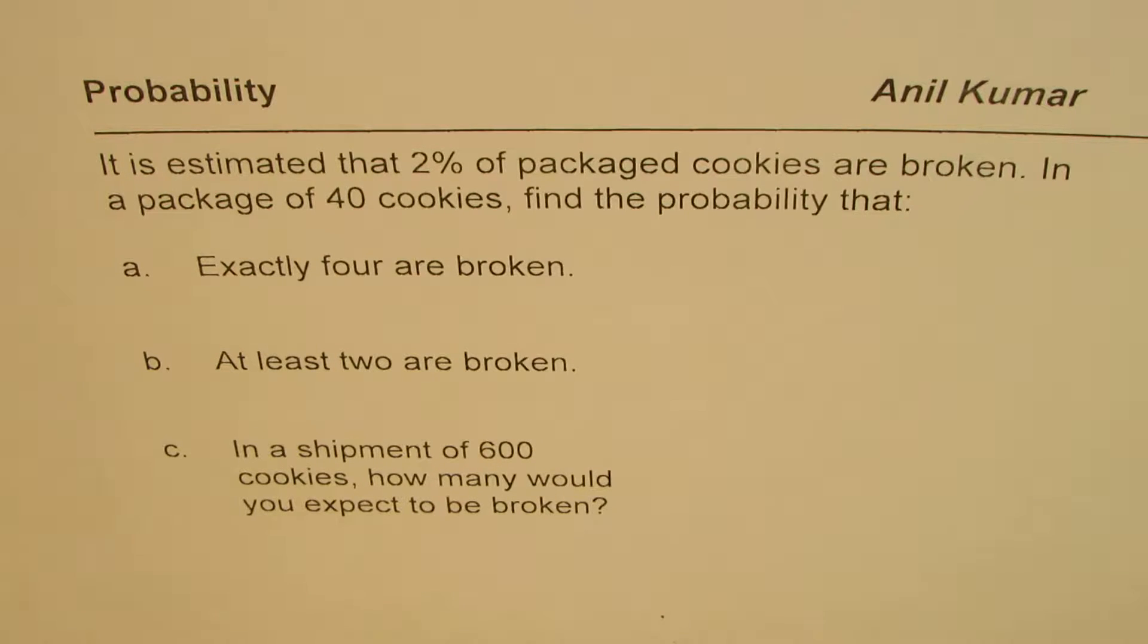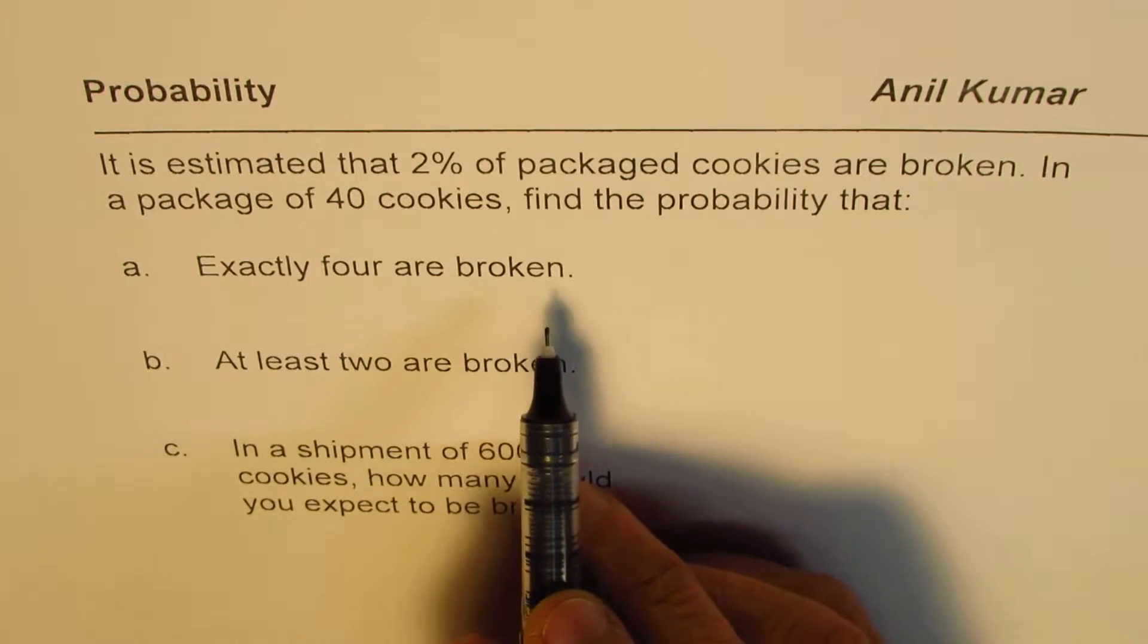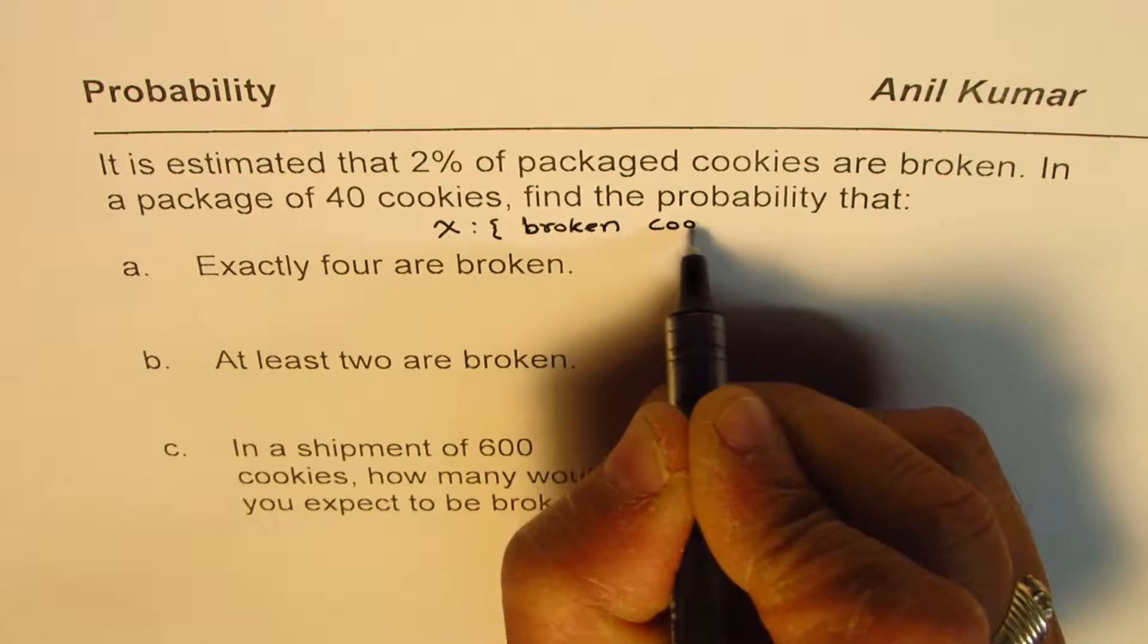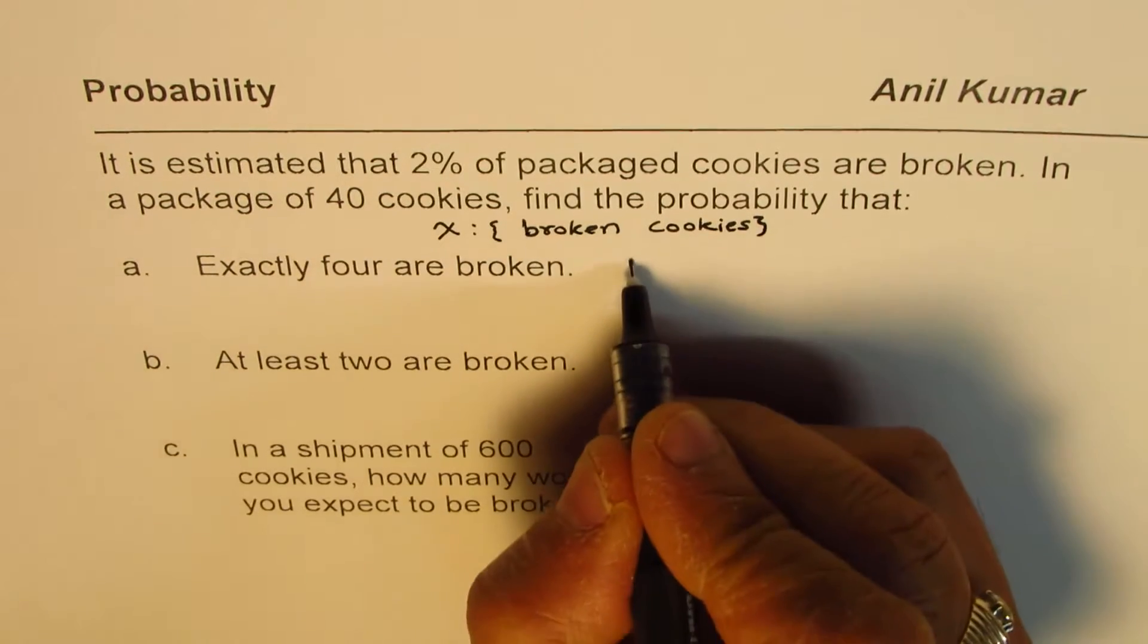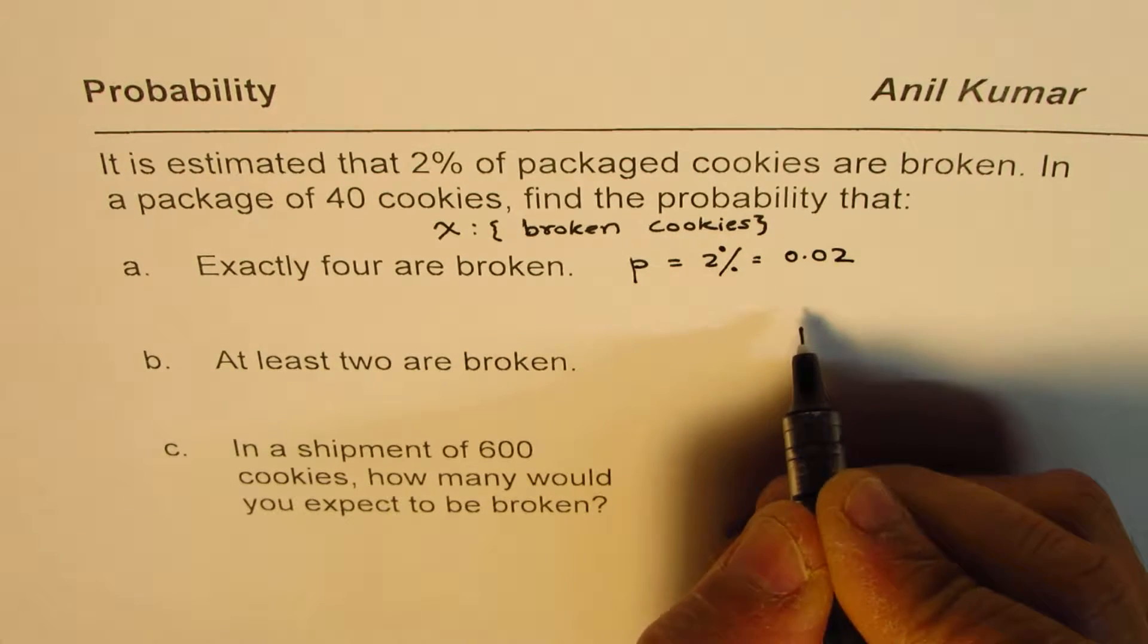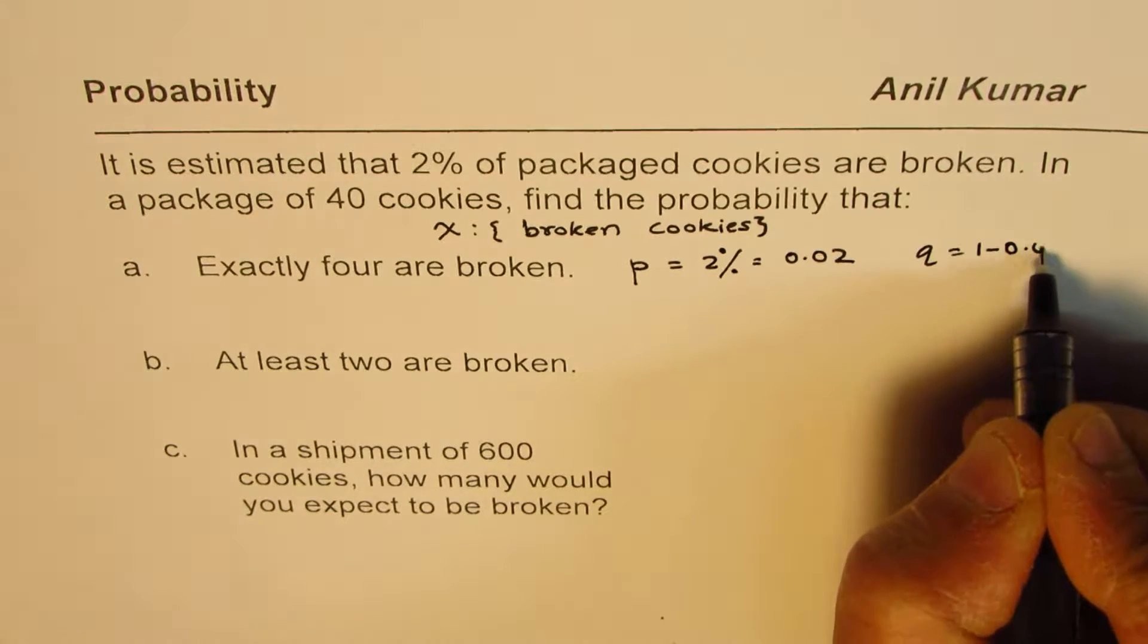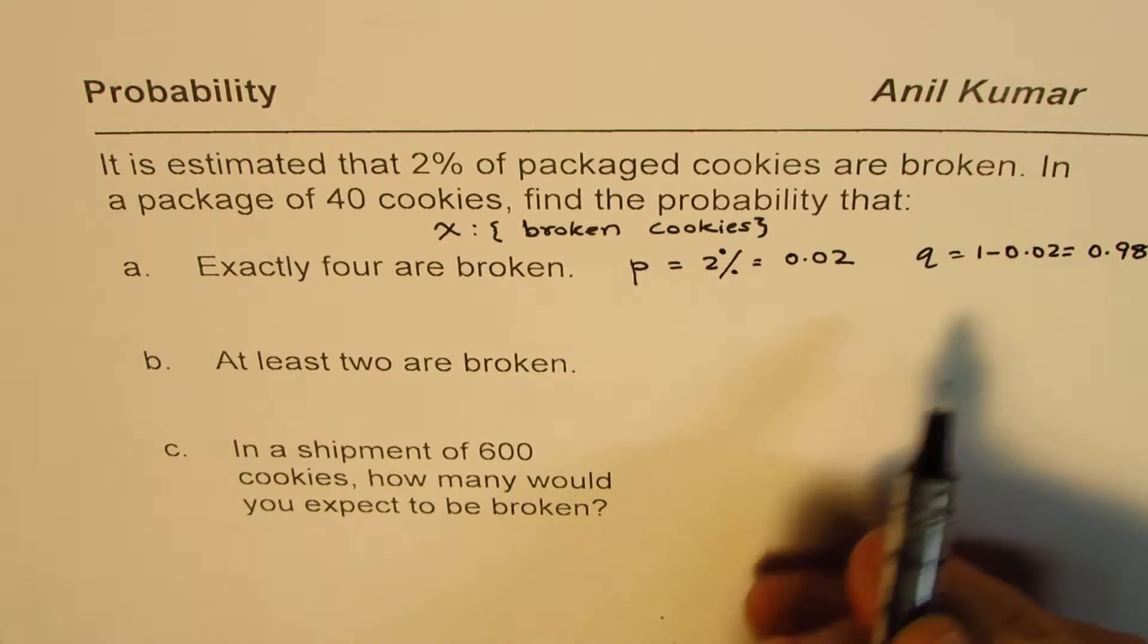In this particular case, let us say that the random variable is the broken cookies. So X, which is the random variable, is broken cookies. Now, probability for this is given to us as 2%, which is 0.02. So probability for it not to be broken will be 1 minus P, or 1 minus 0.02, which is equal to 0.98.